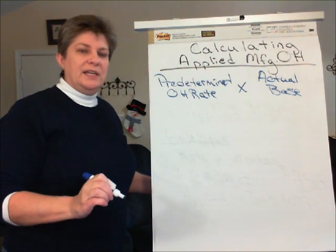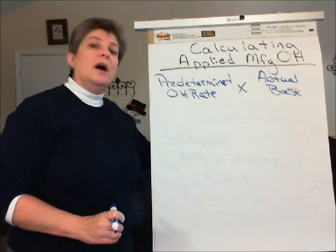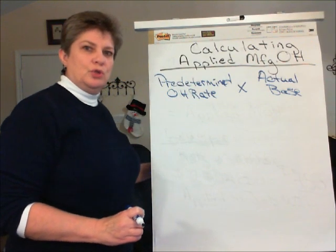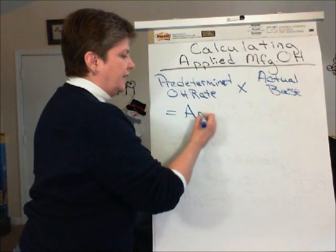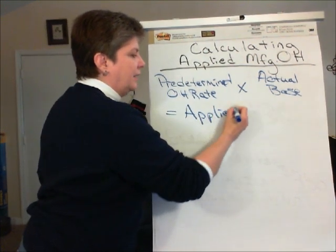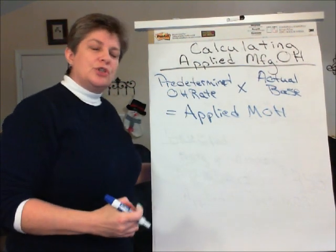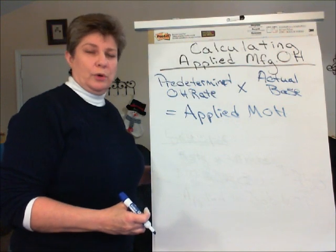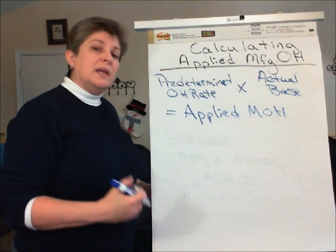Whatever the base is, we multiply the rate times the actual amount of that base that is consumed by that individual job. And that of course is going to yield the amount of applied manufacturing overhead that is charged to the job cost sheet and also to the work in process inventory account where those various job costs are being accumulated.